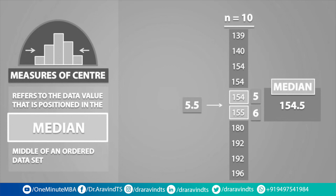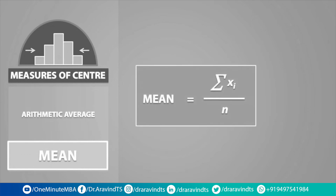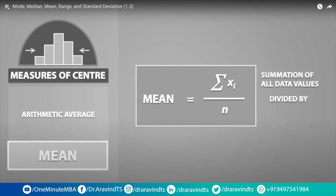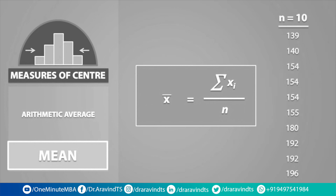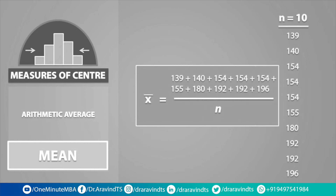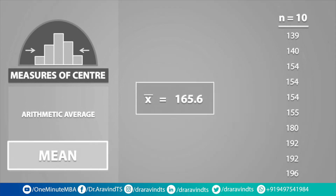The last measure of central tendency we will talk about is the mean. The mean is just another name for the arithmetic average. The formula is equal to the summation of all data values divided by the total number of data values. If our mean comes from a sample, we call it x-bar. To get the mean for this sample, we add up all the data values, and since there are a total of 10 values, we divide by 10, giving us a mean, or x-bar, of 165.6.